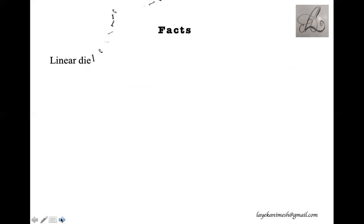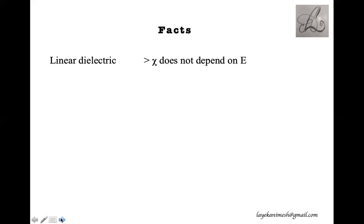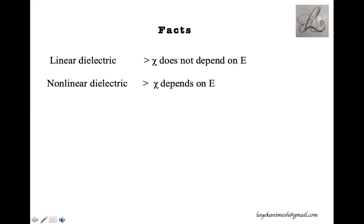The dielectric susceptibility depends upon the applied electric field and is used to classify various mediums. In the case of a linear dielectric, the susceptibility does not depend on the applied electric field. In the case of a nonlinear dielectric medium, susceptibility depends on E, and we will discuss later how it depends upon the applied electric field.